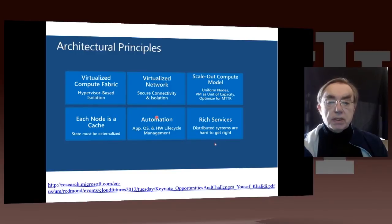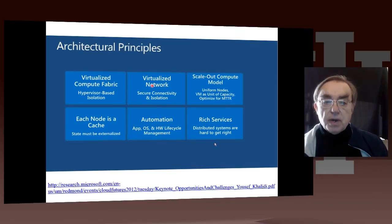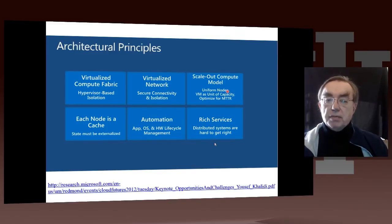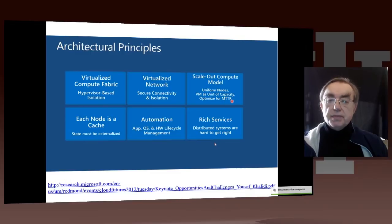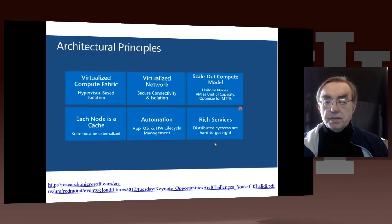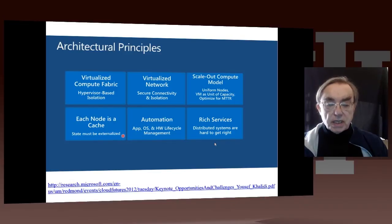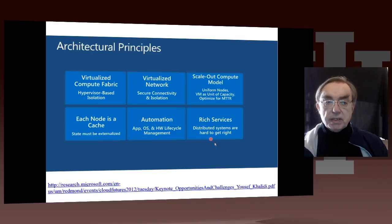Here we have the principles used in building a cloud. The virtualized compute fabric — we just saw a picture of that. Virtualized networking supports security and isolation between different applications. We have the scaling-out model and elastic applications. The virtual machine is the unit of capacity, typically offered in different sizes with different amounts of memory and different numbers of cores. They're optimized for mean time between recovery. Each node is a cache, the state must be externalized and stored. Everything is automated, and we have lots of services which need to be run in a distributed fashion — and as we know, that's hard to do.